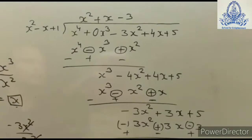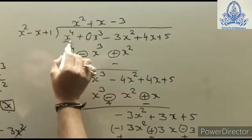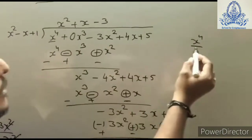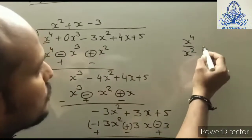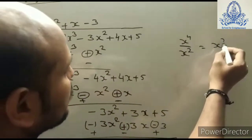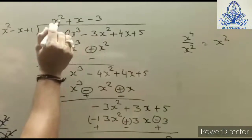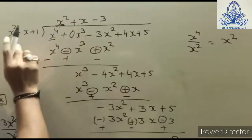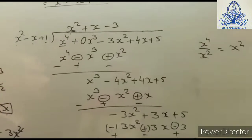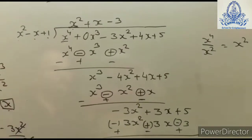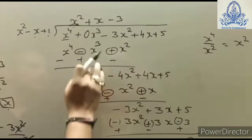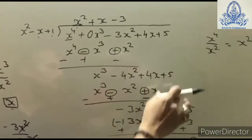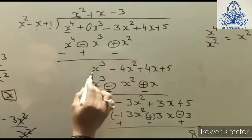We divide the first term of the dividend by the first term of the divisor, giving x², which is the first term of the quotient. We multiply x² with all terms of the divisor and write the result below, then do the subtraction and bring down the extra terms.